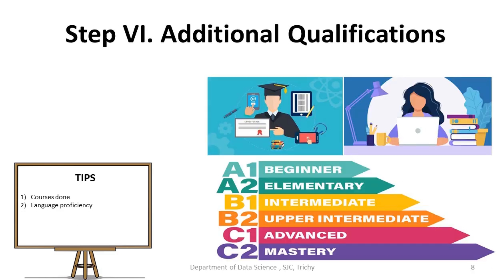Step number six: additional qualifications. Mention about the additional qualifications or skills you acquired to expand your knowledge, like certificate courses related to academics and short-term courses to improve your language proficiency. It gives an impression to the selection panel that you have acquired these additional qualifications by exerting yourself additionally, though not mandatory. But always hold some proof to prove your claim.